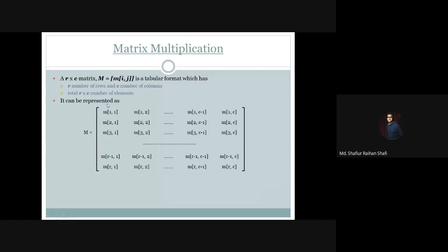The total matrix can be represented with r rows and c columns. The first row first column element is m11, first row second column element is m12, second row first column element is m21, and second row second column element is m22. The total number of elements is r multiplied by c, and the last element of the matrix follows the same pattern.